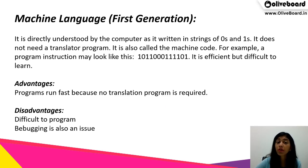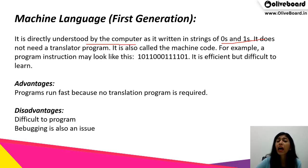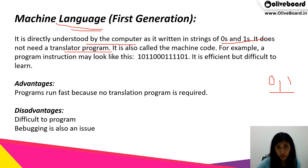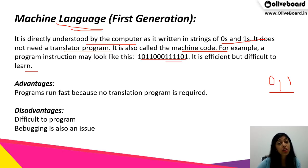First, machine language. It is directly understood by the computer as it is written in strings of zeros and ones. The computer understands only zero and one, so every instruction is written in the form of either zero or one. It does not need a translator program and is called machine code. It is efficient but very difficult to learn.